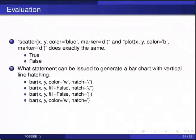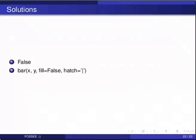Other options include bar(x, y, fill=False, hatch) and bar(x, y, color='w', hatch=''). The answers: for question one the answer is false — both functions do not produce the same kind of plots. For question two, bar(x, y, fill=False, hatch='|') is the correct option to generate a bar chart with vertical line hatching. We hope you have enjoyed this tutorial and found it useful. Thank you.